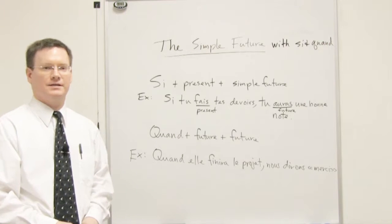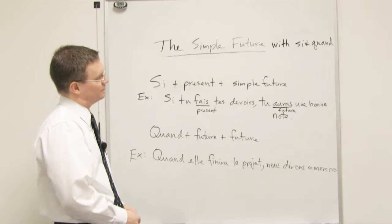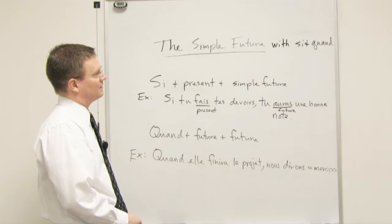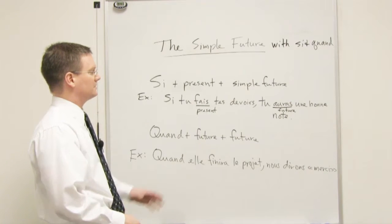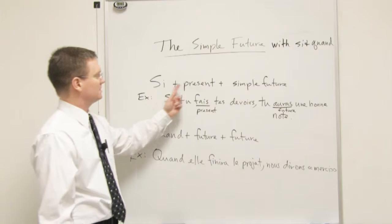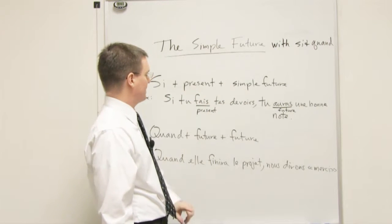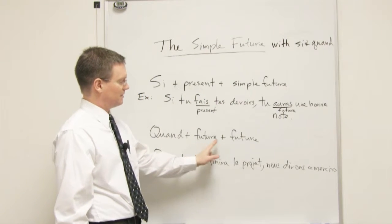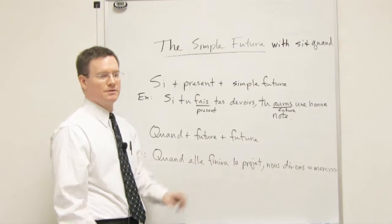Hello, I'm Brother Taylor, and today we're going to be talking about the simple future with si and quand. There are actually two formulas I'd like you to memorize. One is si plus the present plus the simple future. The other is quand plus the future and the future. Both of these are simple future also, by the way.